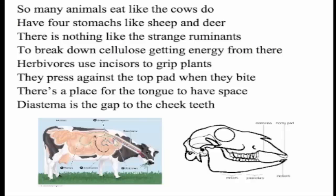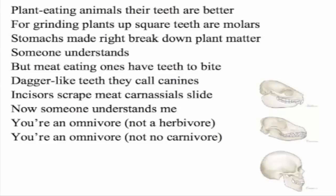Many animals eat like cows do, with four stomachs like sheep and deer. Herbivores use incisors to crisp plants — the diastema is the gap in their teeth. When eating animals, their teeth are better suited. Carnivores have canine teeth for tearing meat. You're an omnivore — not just a carnivore.